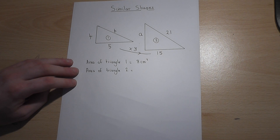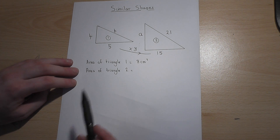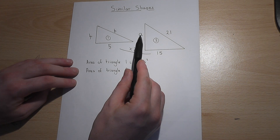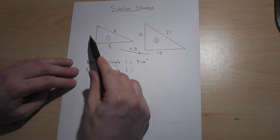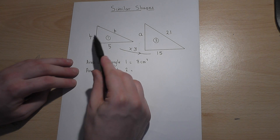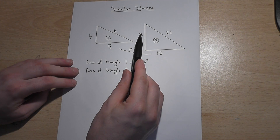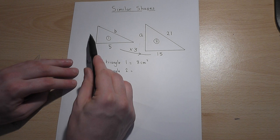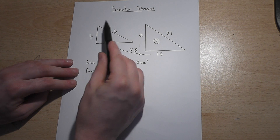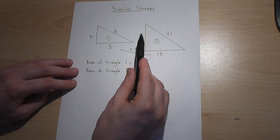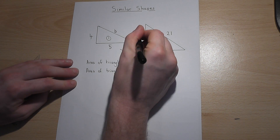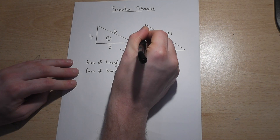This side here corresponds with the 4. So to find 'a' we just need to multiply 4 by 3. So 'a' must equal 12.